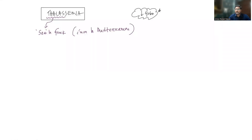Hello everyone. We'll continue our discussion on thalassemia, the second hemoglobinopathy we are discussing after sickle cell disease. In sickle cell disease, the amount of hemoglobin produced is normal, but it is a different type of hemoglobin with different properties, ultimately causing the disease. So there is basically a qualitative effect in sickle cell disease.